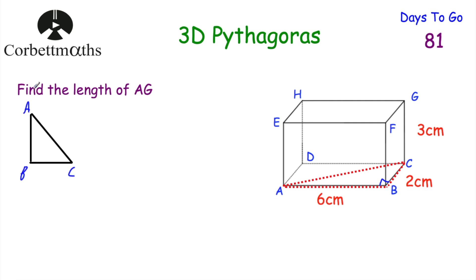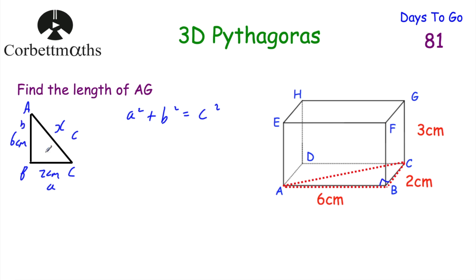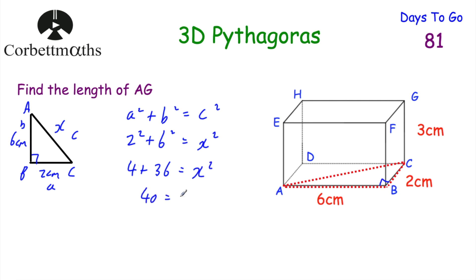Looking down at the base, triangle ABC has AB equal to 6 centimetres and BC equal to 2 centimetres, and we want to find the diagonal AC. Pythagoras' theorem: A squared plus B squared equals C squared, where A and B are the two shorter sides and C is the hypotenuse. Substituting: 2 squared plus 6 squared equals X squared. That's 4 plus 36 equals 40 equals X squared. So X equals the square root of 40, which is 6.32455... centimetres.